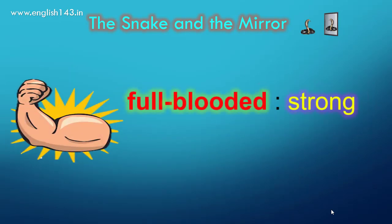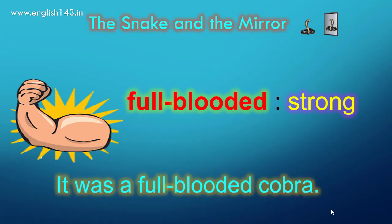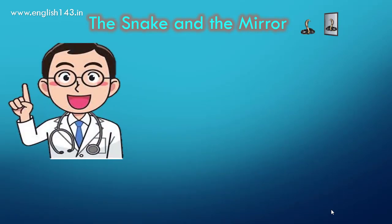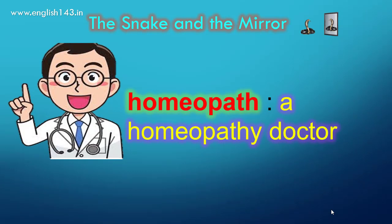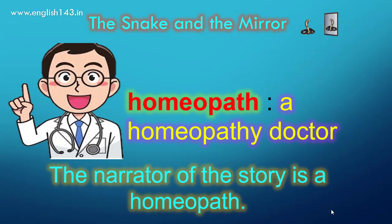Full-blooded means strong. It was a full-blooded cobra — that means it was a strong cobra. Homeopath means a homeopathy doctor. The narrator of the story is a homeopath.